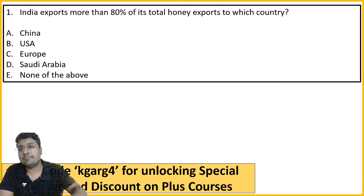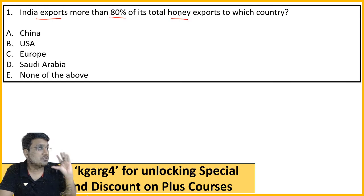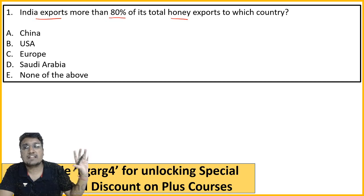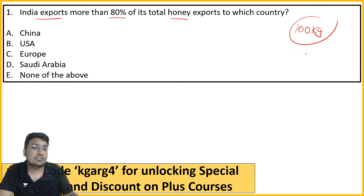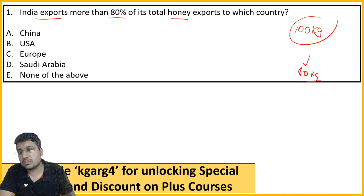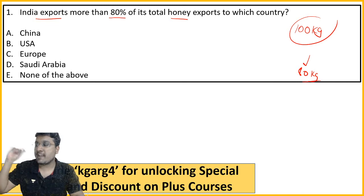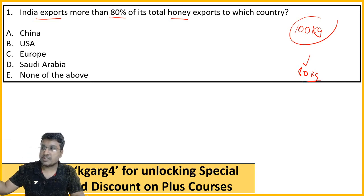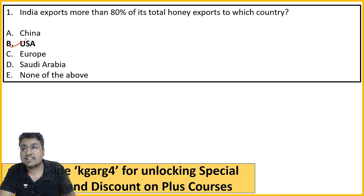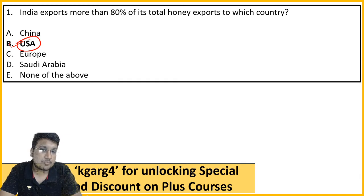First question: India exports 80% of its honey to a single country. If we export 100 kg in a year, then 80 kg goes to only one country. Which country is it? Options: China, US, Europe, Saudi, or none of the above. Our main source for current affairs is PIB - Press Information Bureau. The right answer is USA - 80% of honey export goes to the US.